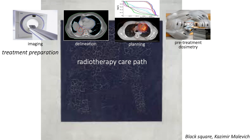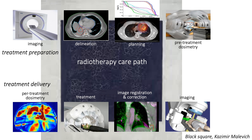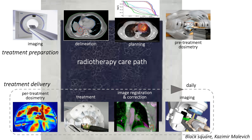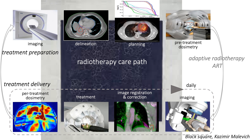Before we start the treatment, there's treatment dosimetry — work of the physicists checking if everything that has been planned is qualitatively correct. Then we go to the daily treatment. As Frederic already mentioned, radiotherapy is typically a stepwise process with daily sessions that can go from a few sessions up to six or seven weeks of treatment. Each day we first do imaging on the treatment couch to check if everything defined during preparation is correct, then correct positioning if needed, then start the treatment, with per-treatment dosimetry done daily throughout.